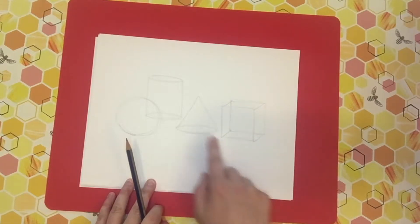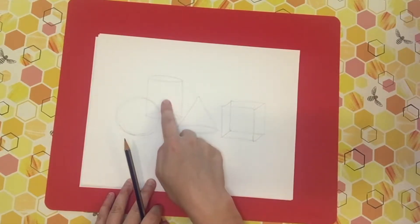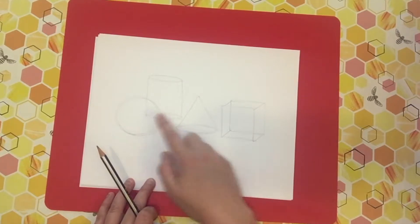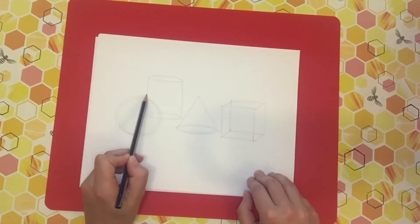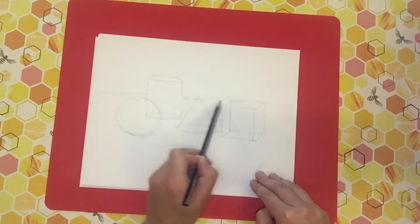So here I have my cube, my cone, my cylinder, and my soon-to-be sphere. I'm going to put these all on a baseline. Pretend they're on this imaginary table.